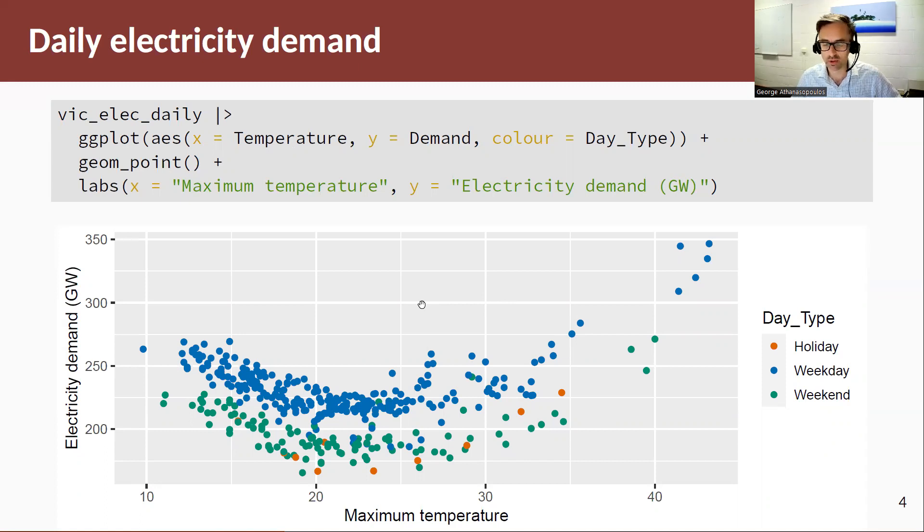And we're going to look at the relation between electricity demand and the maximum daily temperature. So here we see two types or three types of days that we are focusing on. We're going to look at weekdays and non-weekdays, and there's two types of non-weekdays: we're going to either have weekdays or another two different types, which is a weekend or a holiday, or a day that was a holiday, that can be a weekday or a weekend.